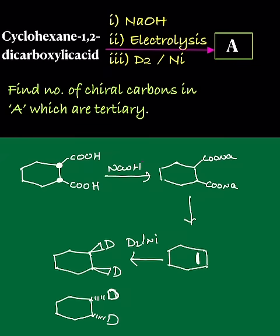You should not write that, and here you should write R because both are the same. But the question is about number of chiral carbons in A which are tertiary.